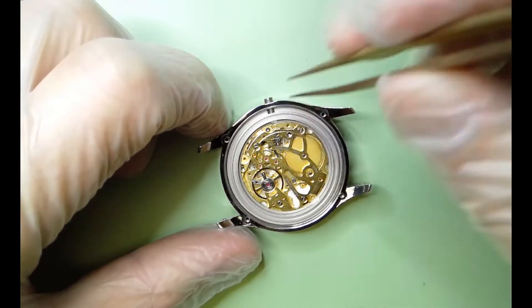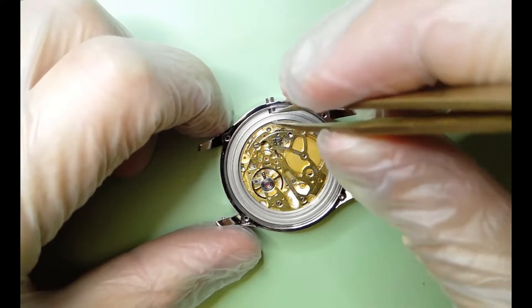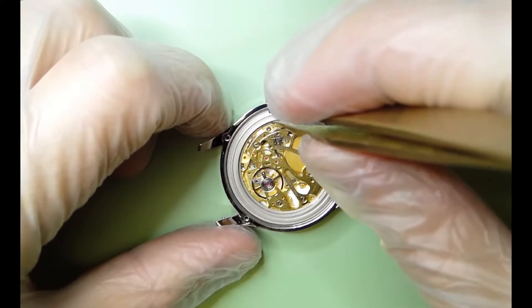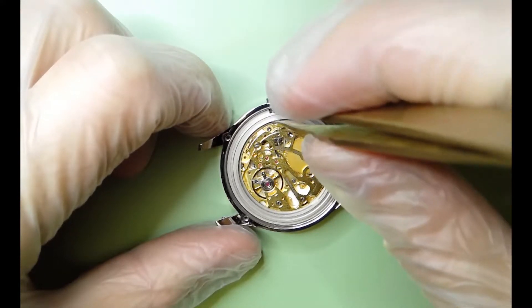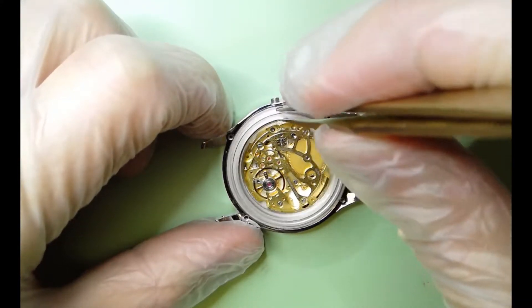So what you're going to do is remove the movement holder. I'm going to grab it right there, there's a great pinch point right here above where the crown stem would go normally. Lift it straight out.